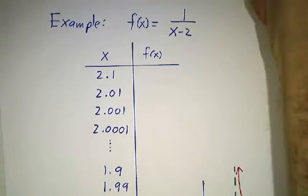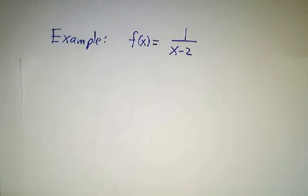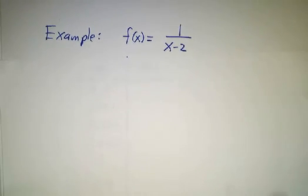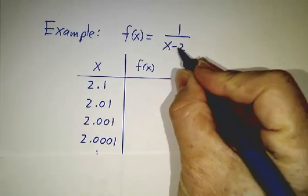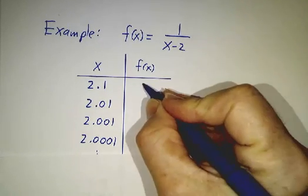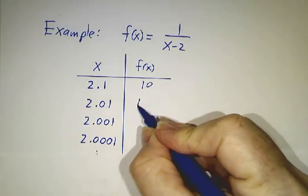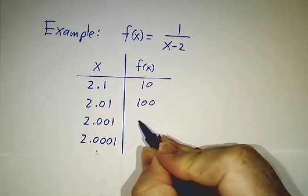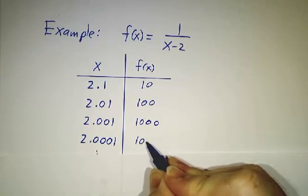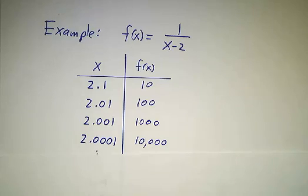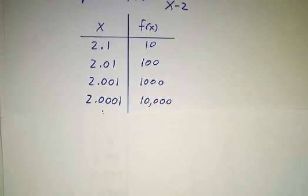Let's look at an example. The function f is 1 over (x minus 2), and I claim that there is a vertical asymptote at x equals 2. If you plug in 2.1, then 2.1 minus 2 is a tenth, and 1 over that is 10. Plug in 2.01, you get 100. At 2.001 you get 1000, and at 2.0001 you get 10,000. The function keeps growing and growing.